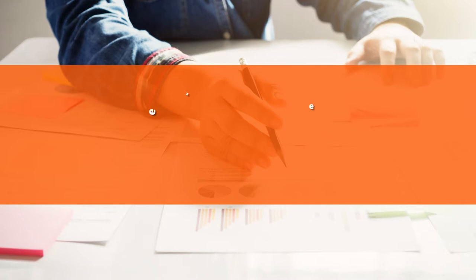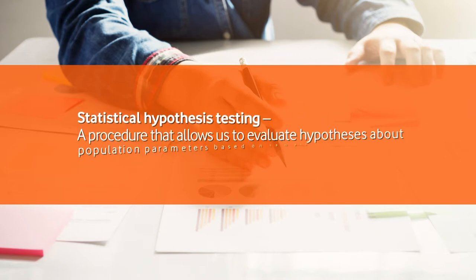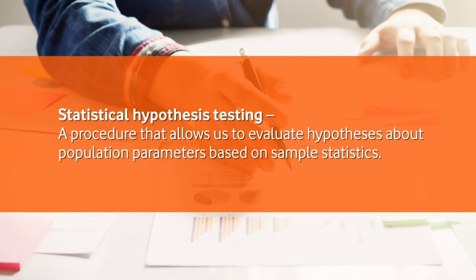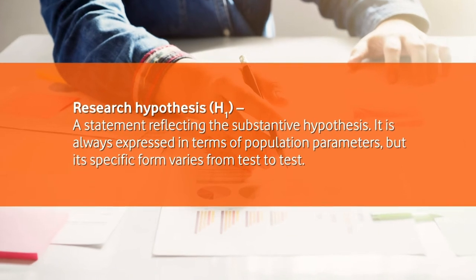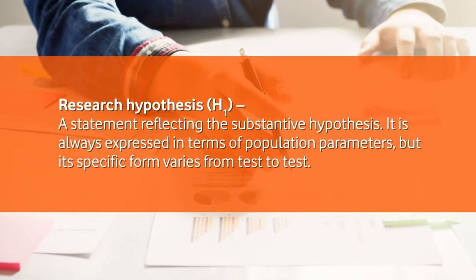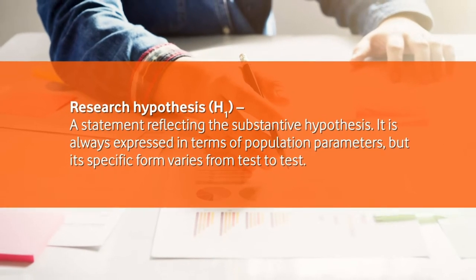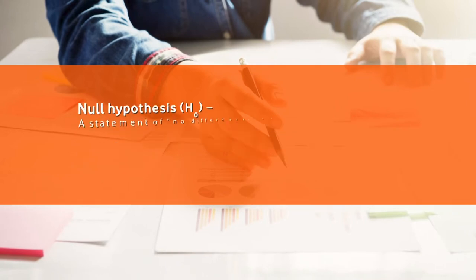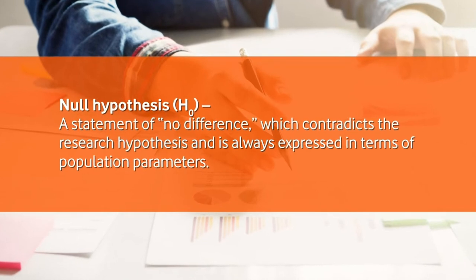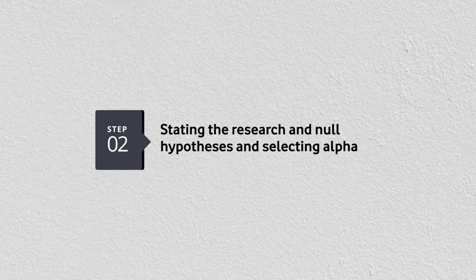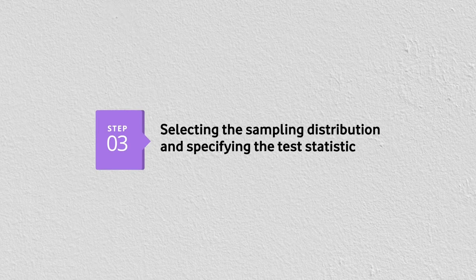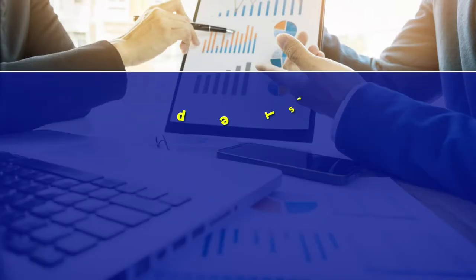Statistical hypothesis testing is a procedure that allows us to evaluate hypotheses about population parameters based on sample statistics. The research hypothesis, also called the alternative hypothesis, is a statement reflecting the substantive hypothesis expressed in terms of population parameters. The null hypothesis is a statement of no difference, contradicting the research hypothesis and always expressed in terms of population parameters. There are five steps: making assumptions, stating the research and null hypothesis and selecting alpha, selecting the sample distribution and test statistics, computing the test statistics, and making a decision and interpreting results.